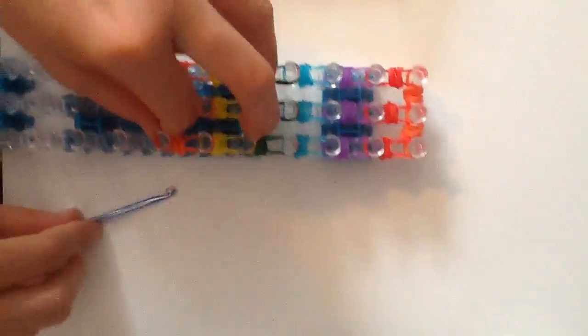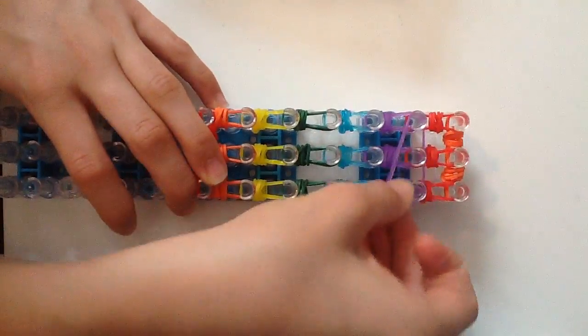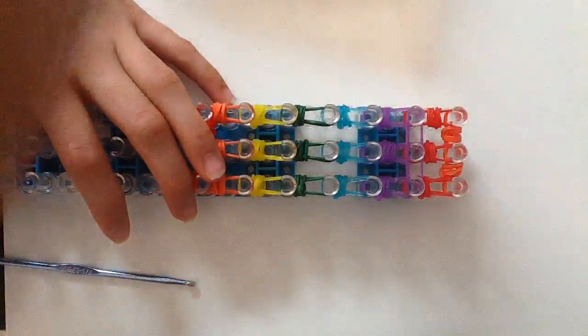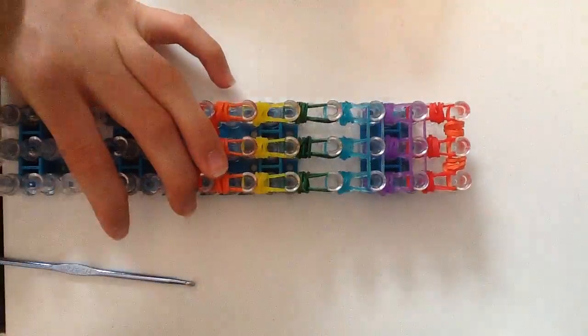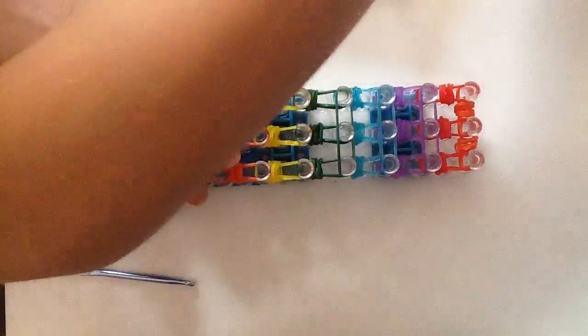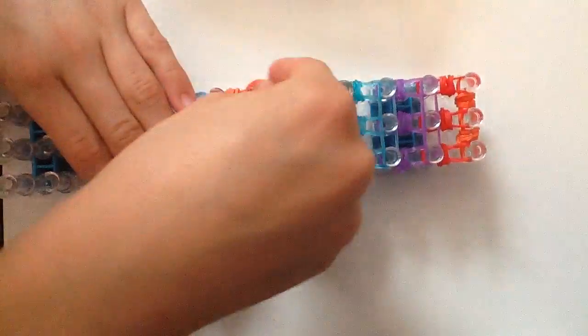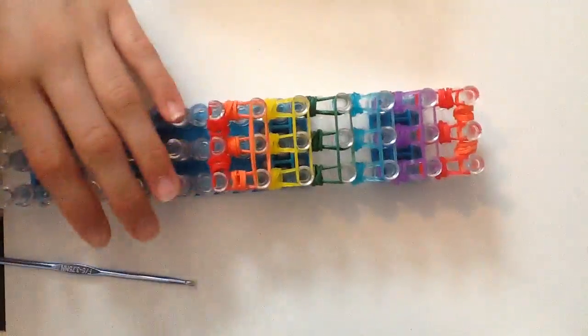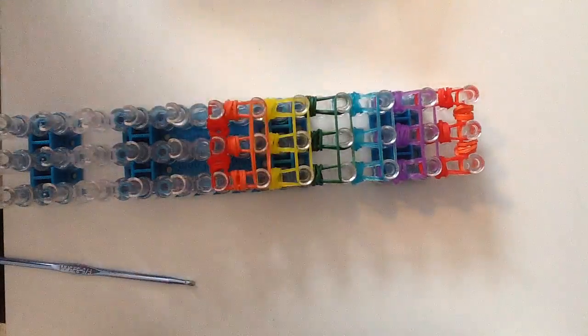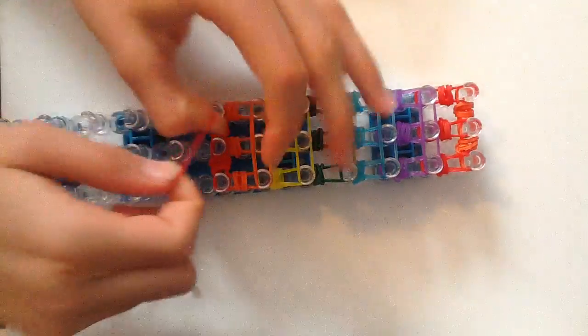Now we can do our horizontals. You're going to take two bands and just lay them across each peg. Now you're going to four times cap this. Cap it four times.